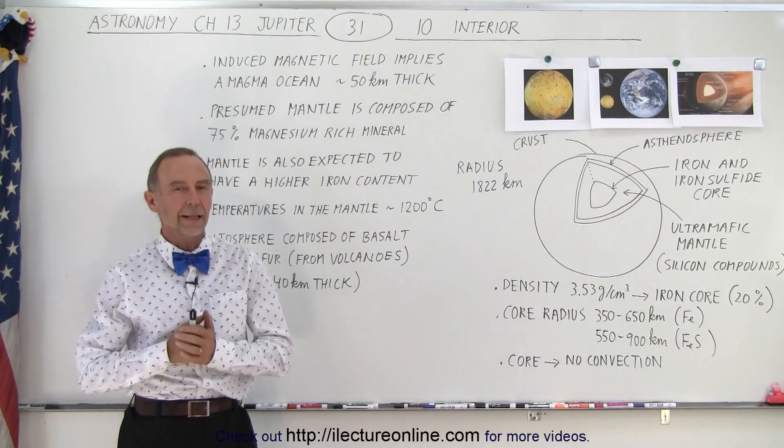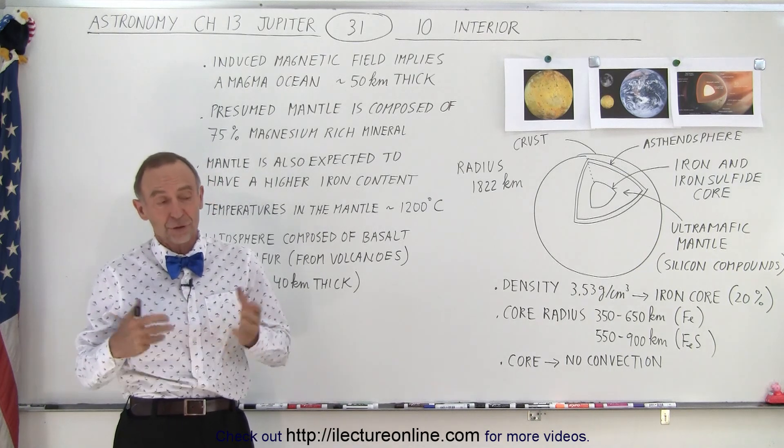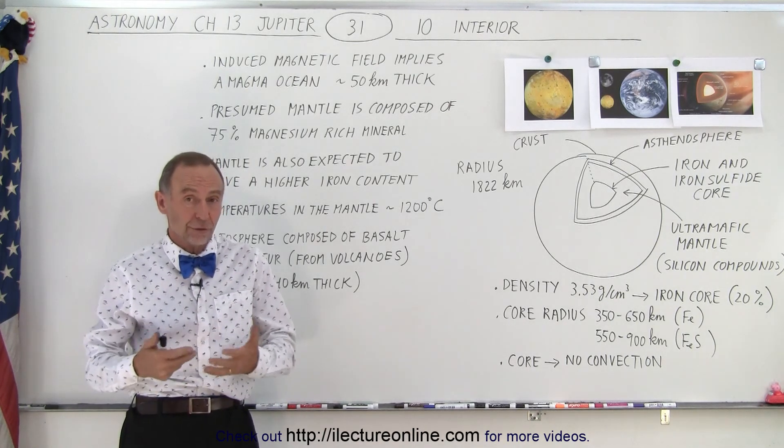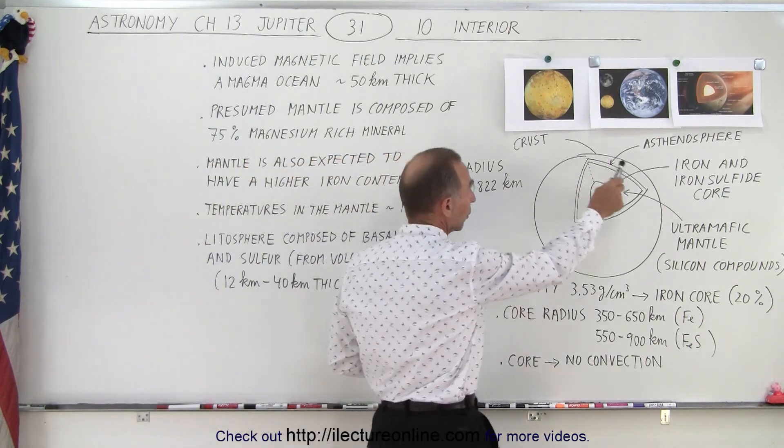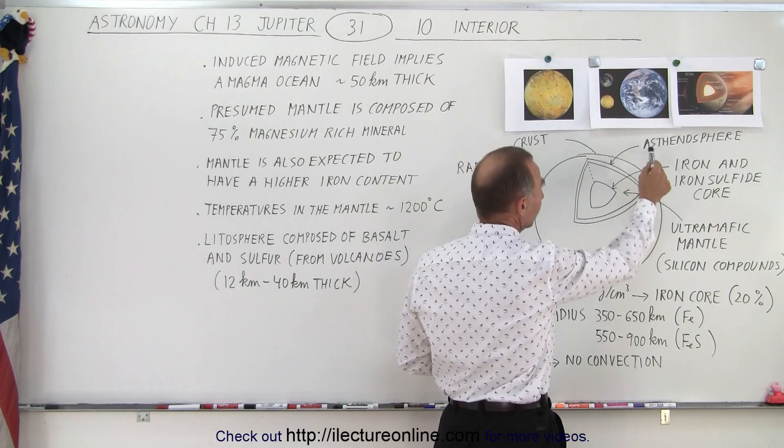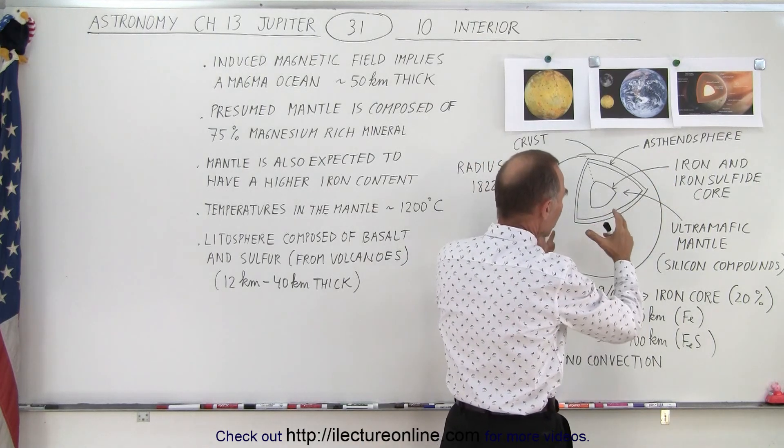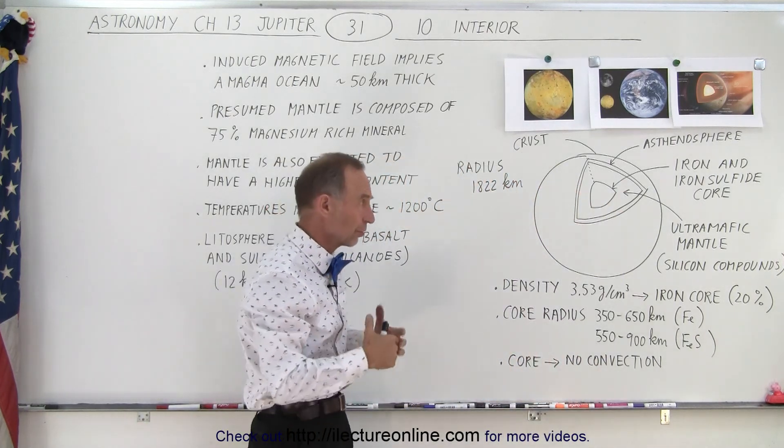Welcome to our lecture online. Now let's take a look at the interior of Io. It turns out that the interior has a basic structure that looks very much like the interior of the Earth. It has a crust, below the crust an astenosphere, below the astenosphere a mantle, and below the mantle there is a core. So roughly the same structure as the Earth's interior.